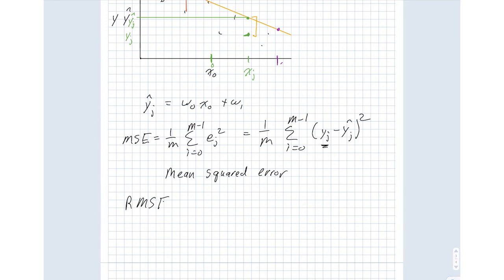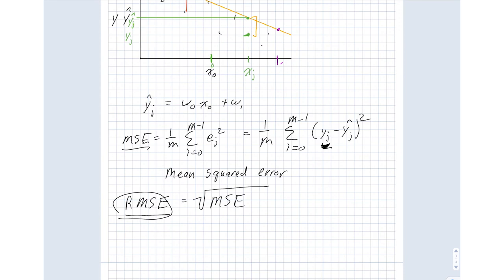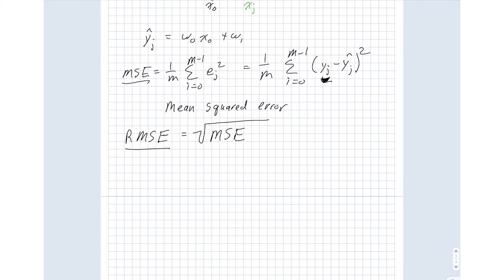Fundamentally, if I'm trying to minimize mean squared error compared to minimizing root mean squared error, I will end up with the same answer, because the square root function is a monotonic function. Another form of error metric is mean absolute error — the A is for absolute. That is a sum over J of the absolute value of E_J, which is the sum of absolute values of Y_J minus Y hat_J.